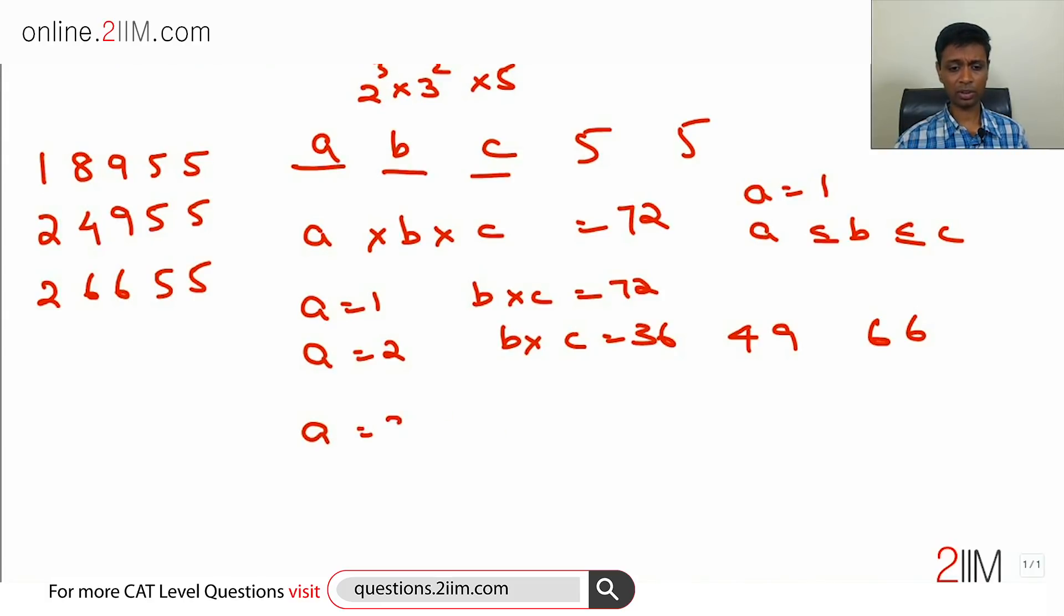Let's go to A equal to 3. B times C is 72 by 3, which is 24. Remember, one thing here: B and C have to be both at least equal to 3. We assumed A less than or equal to B less than or equal to C. I don't really have to even worry about 1 times 24 or 2 times 12. B times C could be 3 times 8 or 4 times 6. Both are possible.